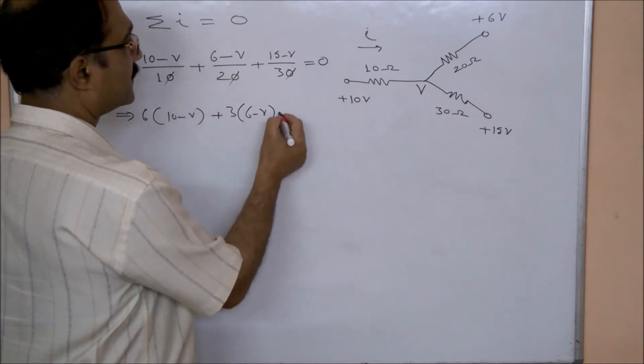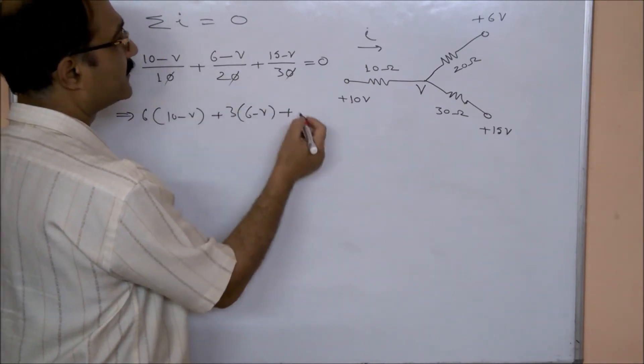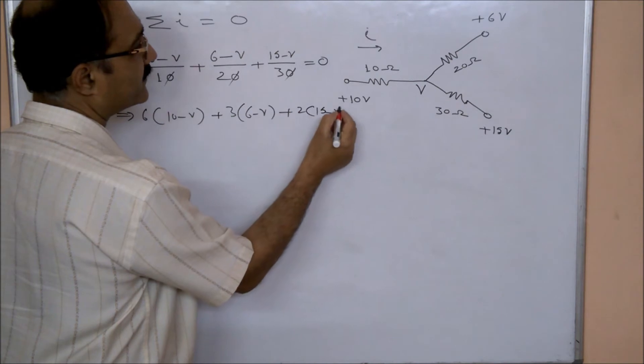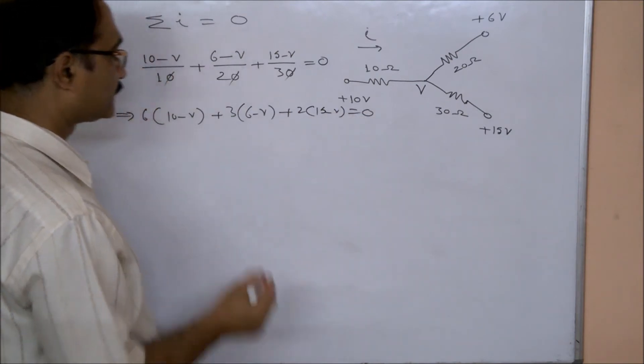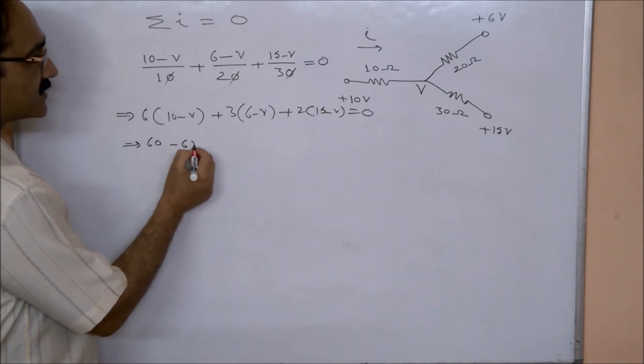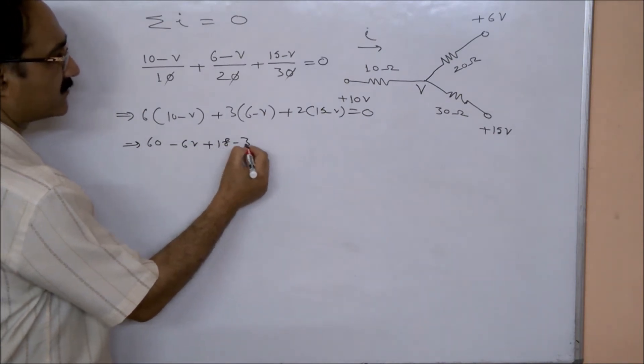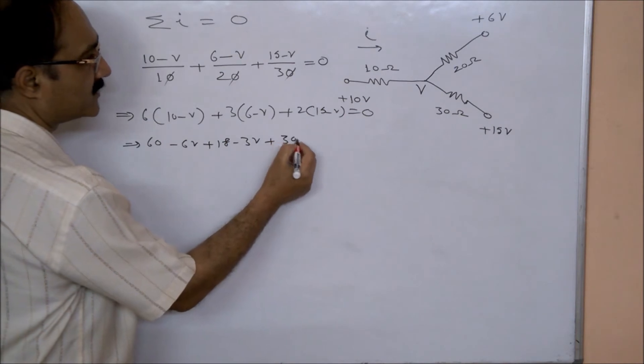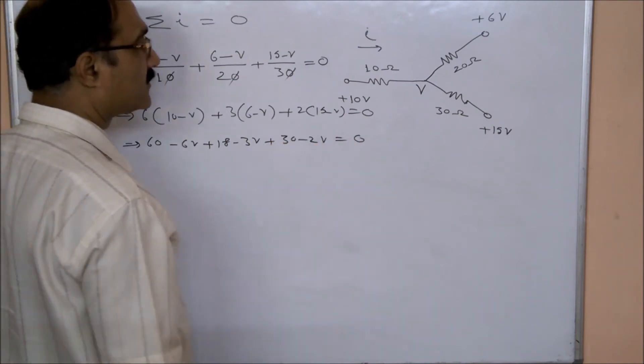Plus this will be 2(15 - V) equal to 0. So this will give us 60 - 6V + 18 - 3V + 30 - 2V = 0.